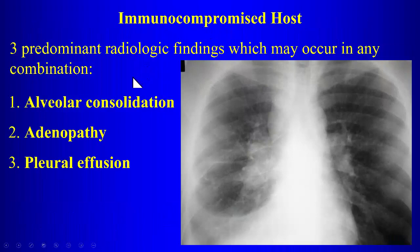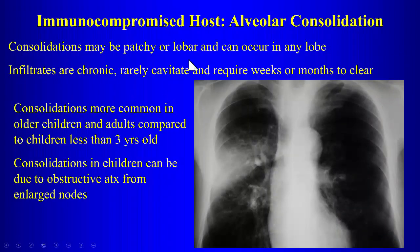For the immunocompromised host, the three predominant radiologic findings are consolidation, adenopathy, and pleural effusion — any combination can be seen. For unexplained pleural effusion or unexplained lymphadenopathy, include tuberculosis in your differential. The infiltrates are chronic, rarely cavitate, and require weeks to months to clear.